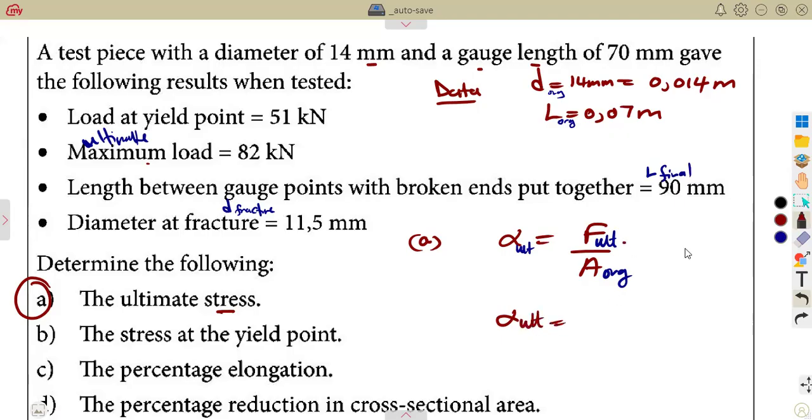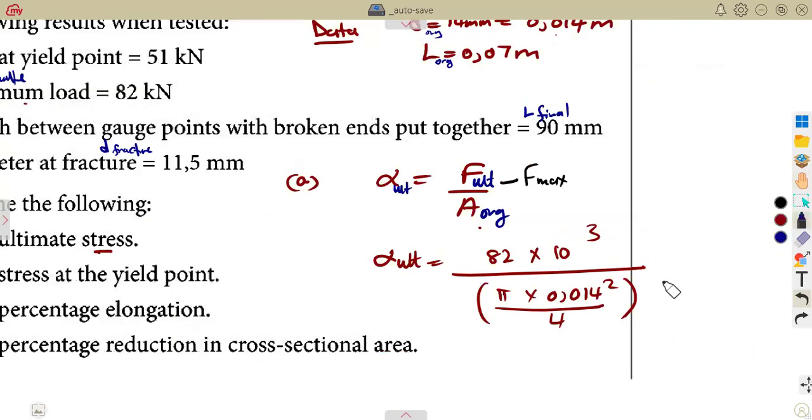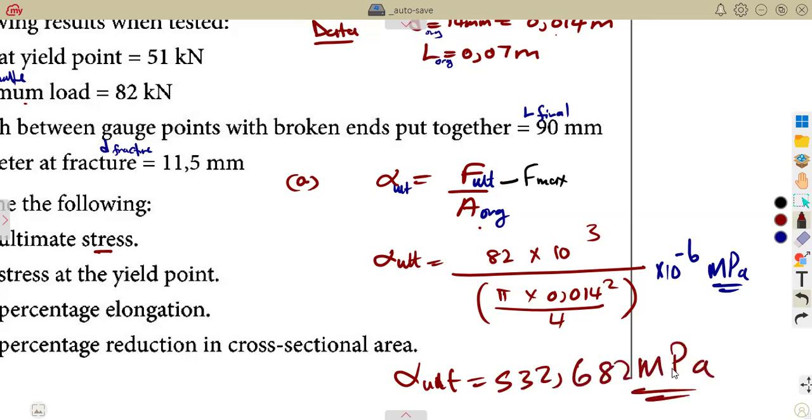So this was going to be the maximum, the force, the ultimate, maximum. Maximum force is supposed to be used. Are you going to be able to tell which force are you going to use there? Nothing has changed. Over the area, original, pi d squared from the original diameter. So that's pi times d, 0.014 squared over 4. Remember, area of a circle, pi d squared. So that is it, we've got your stress, ultimate stress. And in megapascal, times 10 to the exponent of minus 6. Our answer in megapascal. So that was going to be our ultimate stress, which is 532.682 megapascal.